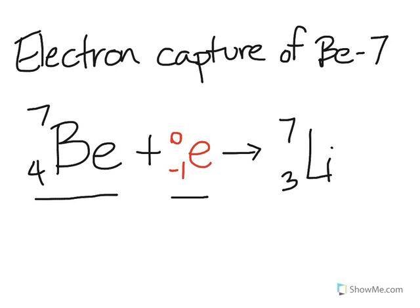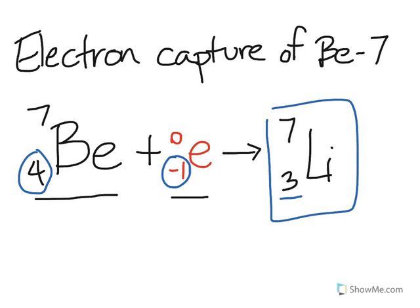And all we really need to do for this type of problem is we add the atomic numbers. So this was a 4 and it's a negative 1. So 4 plus negative 1 gives me a positive 3. And this is the answer to this beryllium 7 electron capture problem.